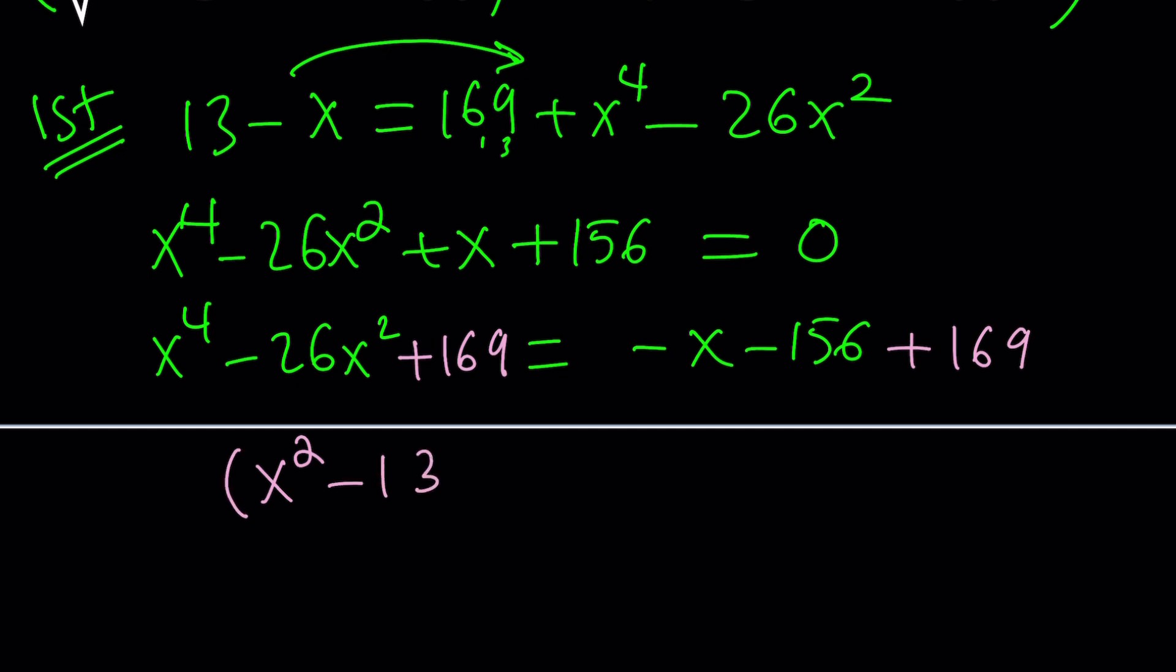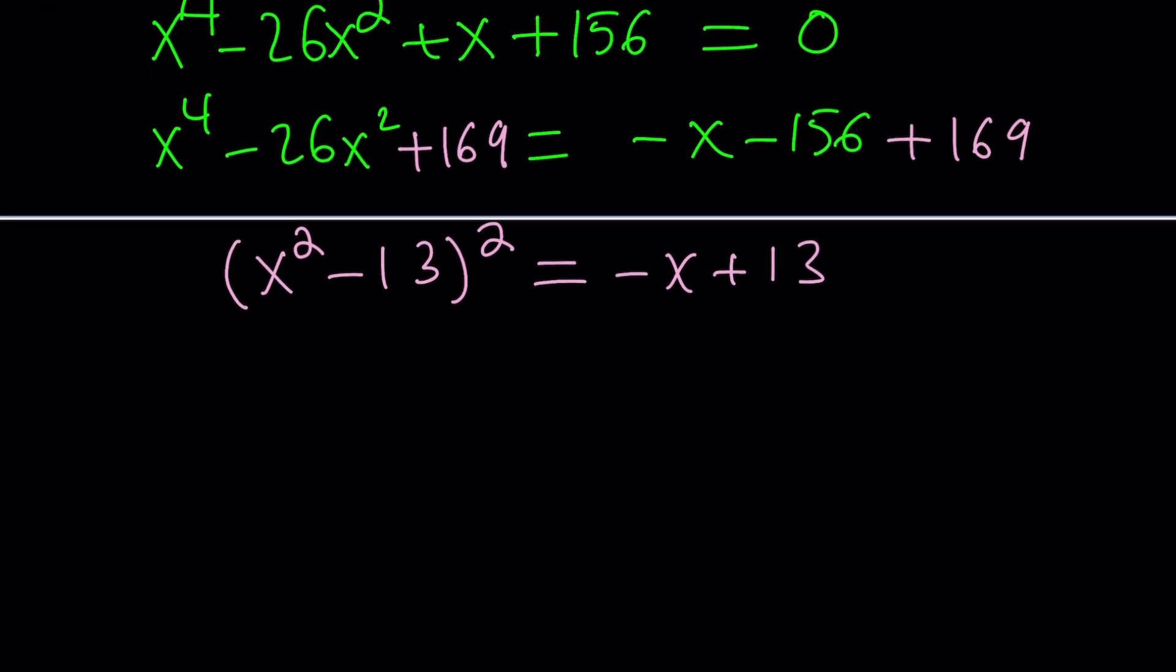So we have now x squared minus 13 squared equals negative x plus 13. Good. Now, what do you do with this though? Well, since the left-hand side is a perfect square, I also want, or at least I wish, that the right-hand side were also a perfect square. But it's not, because it's just linear. I want a quadratic so I can look at the discriminant, the delta. So we need to add a little bit more, but while keeping the left-hand side a perfect square, I want to turn the right-hand side into a quadratic perfect square.